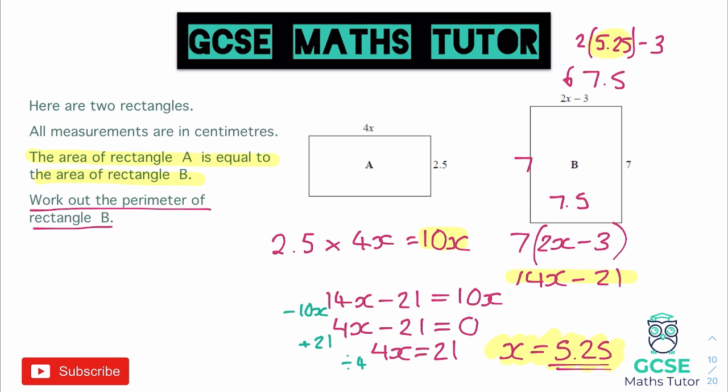So I'm going to write my working out down for that. We have 7 plus 7 plus 7.5 plus 7.5. So that's 14 add 15, so that is equal to 29.